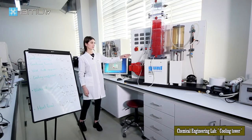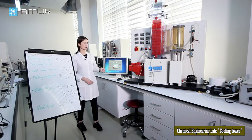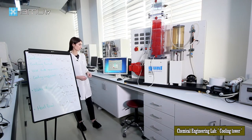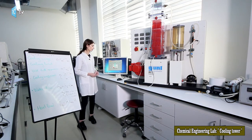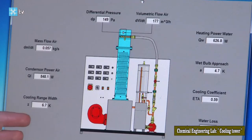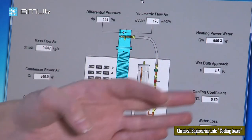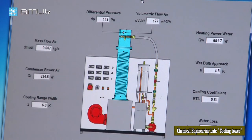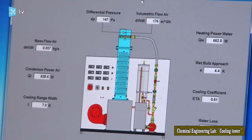We set the heating level of the heater to 2 kilowatts and monitor the results. With increasing cooling water temperature, the cooling range gradually increases, the wet bulb approach decreases, and the cooling coefficient increases. So, increasing the temperature of the cooling water enhances the performance of cooling in the cooling tower.